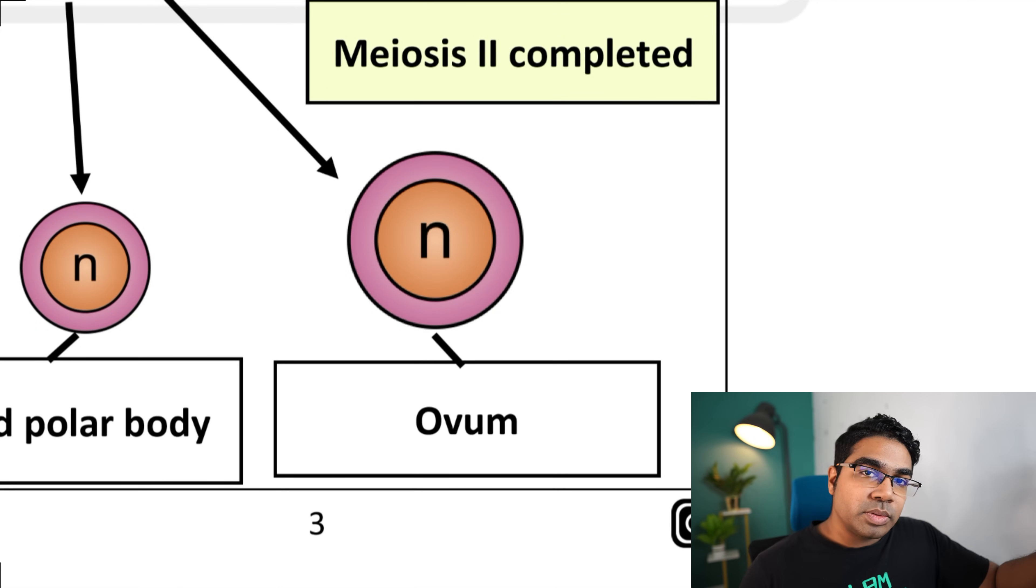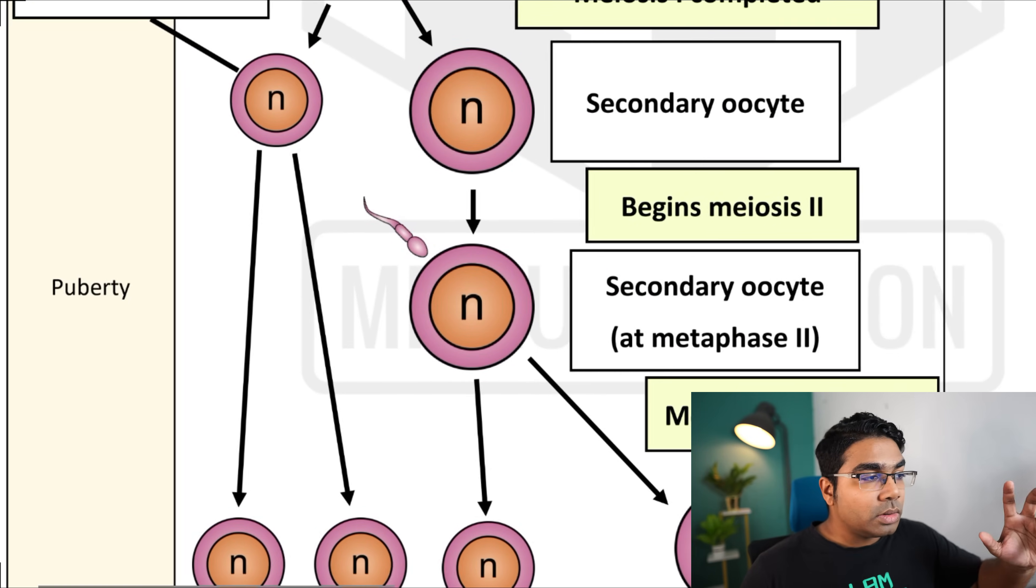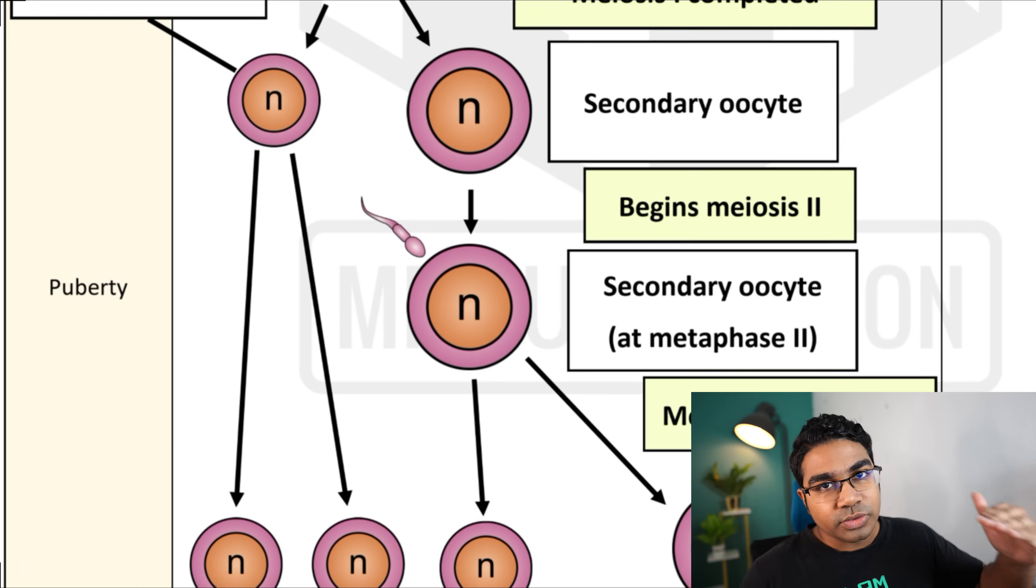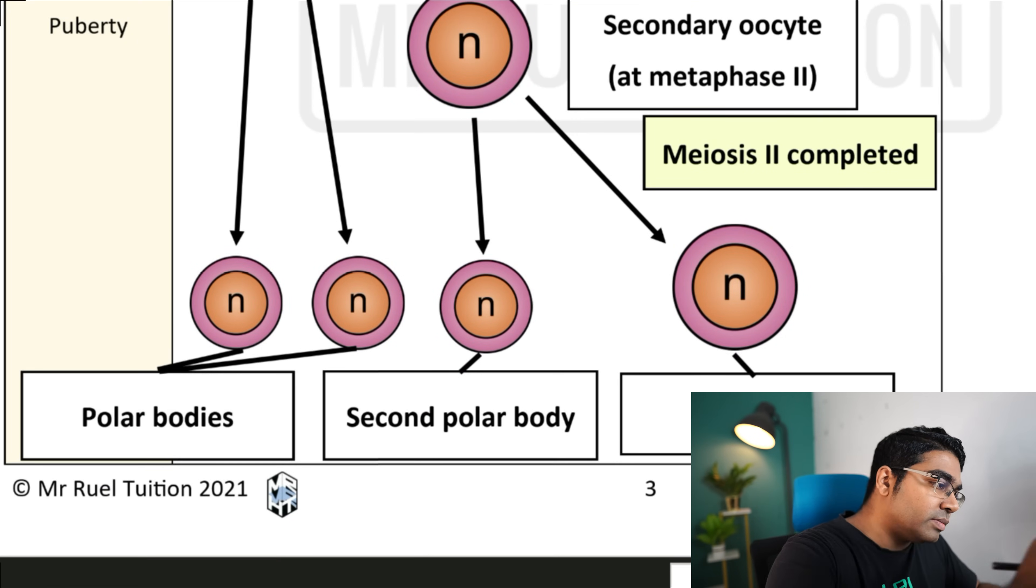Now, what happens to the first polar body? The first polar body may either degenerate or it could also undergo meiosis 2. When the first polar body undergoes meiosis 2, it becomes two further polar bodies. These are cells with very little cytoplasm. At the end of the day, all the polar bodies are going to degenerate.